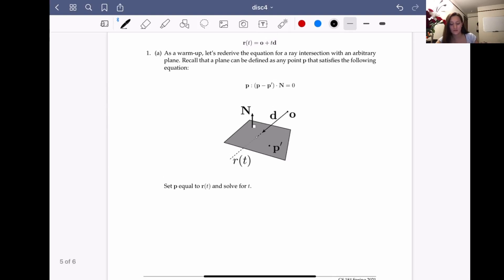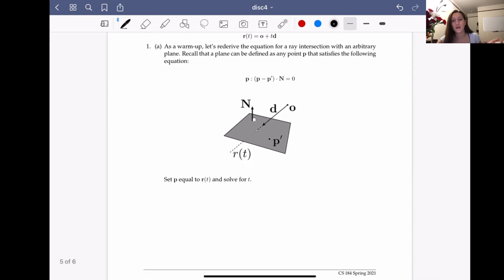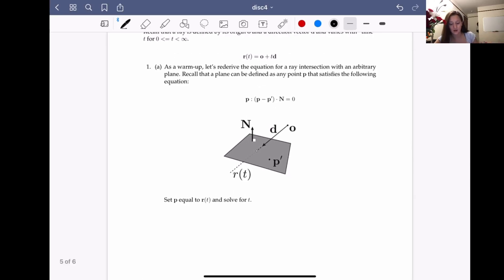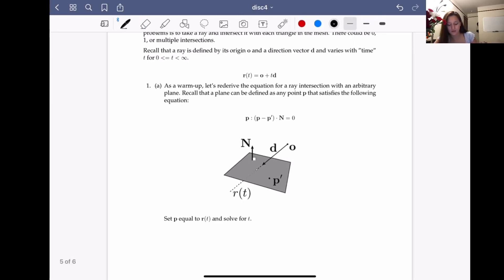In order to do that, we need some sort of equation that'll take our parameters for our ray. So our parameters for our ray is the origin O, the direction vector D, and the parameters for our plane would be P' and N.